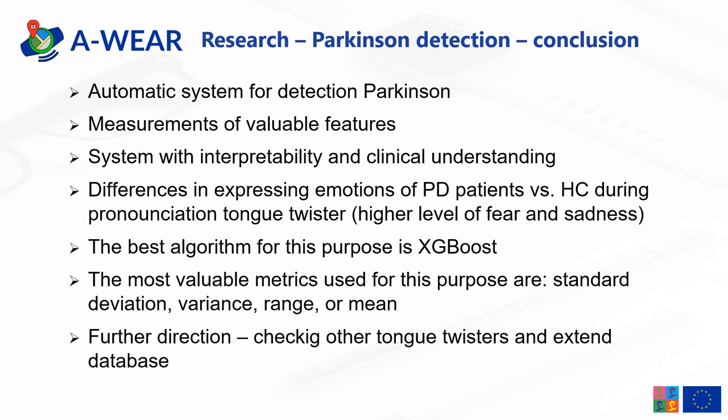Additionally, it was shown that the difference in expressing emotion between PD patients and healthy controls during tongue twister pronunciation is significant — higher levels of fear and sadness were registered for PD patients. The best results were obtained using the XGBoost classifier. The most valuable metrics were standard deviation, variance, range, and mean. In terms of future direction, it could be beneficial to test other tongue twisters and extend the dataset to obtain better results. After applying feature selection, the approach could potentially be used as an mHealth solution, though this is the first work with this kind of approach.